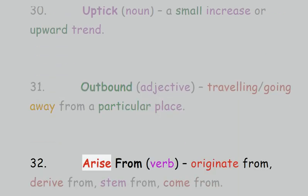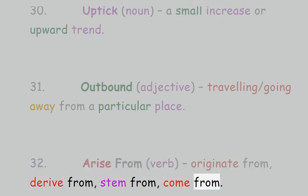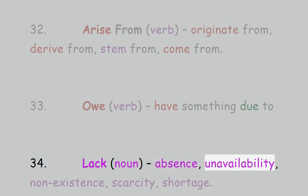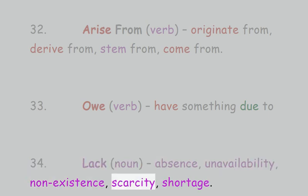32. Arise from, verb: originate from, derive from, stem from, come from. 33. Owe, verb: have something due to. 34. Lack, noun: absence, unavailability, non-existence, scarcity, shortage.